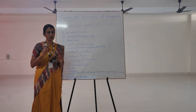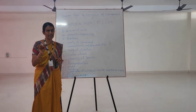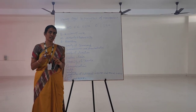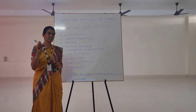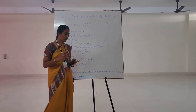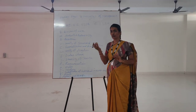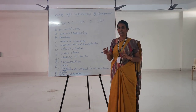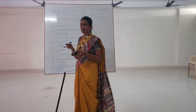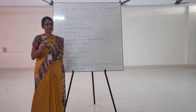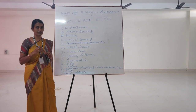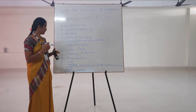The next one is Subordination of Individual Interests to General Interests. The interest of the organization should take priority over individual interests. Individual interests and organizational interests are different. Factors like laziness, non-compliance, resistance, and carelessness can affect this. Individual interests and general interests must be balanced.